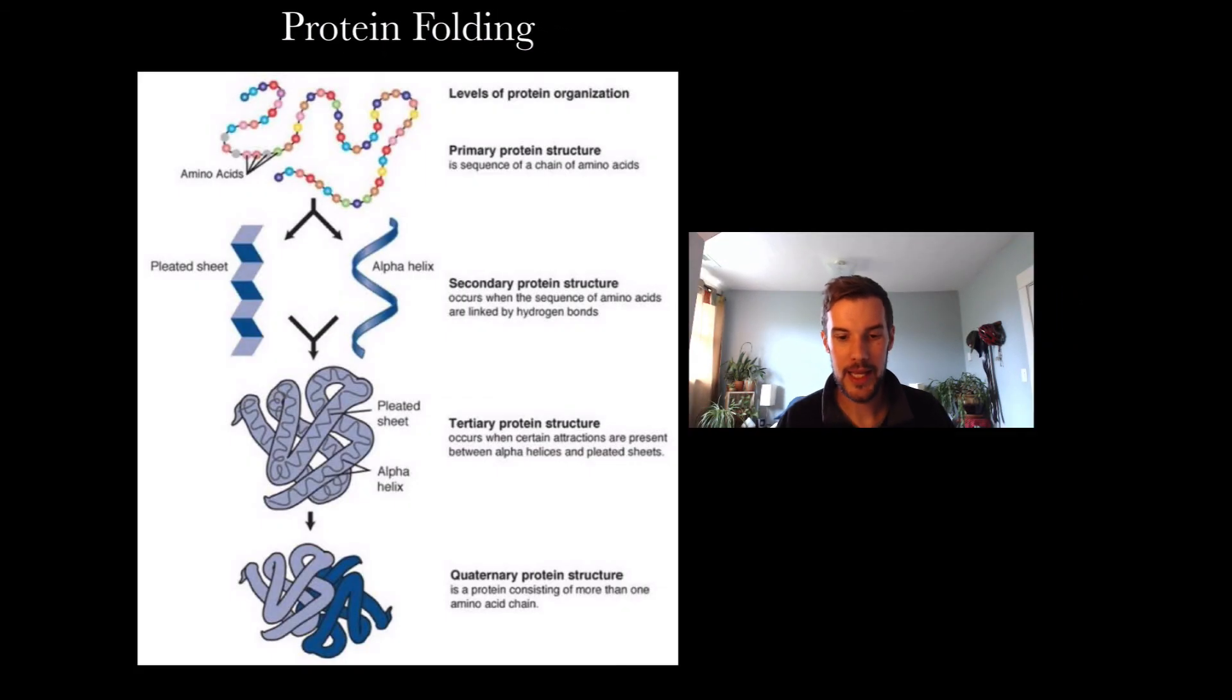Just a little review. We have the primary structure which is peptide bonds and the order of the different amino acids. The secondary structure is the alpha helix and beta pleated sheets.